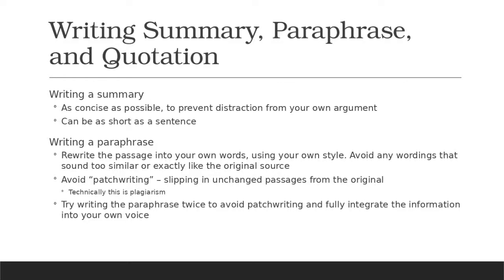When writing a summary, be as concise as possible to prevent distraction from your own argument — a summary can be as short as a sentence. In the context of the annotated bibliography assignment, you're going to need to write a paragraph as a summary for each source that you use in that project.